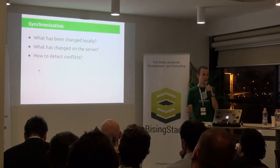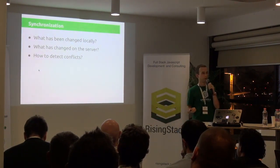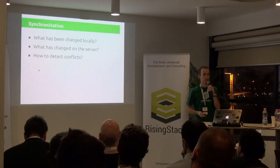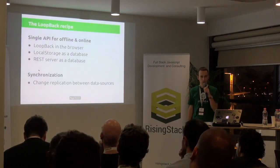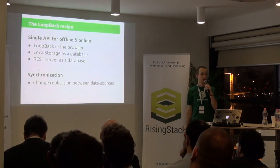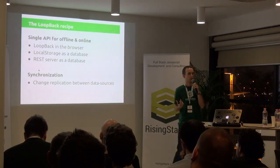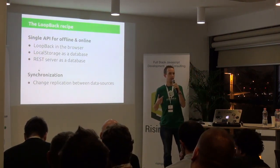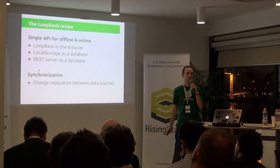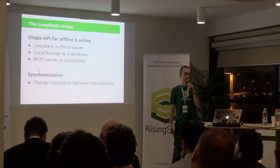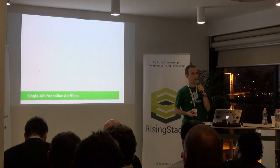How do you figure out what has been changed in the browser? What has been changed on the server in the meantime? And how to detect conflicts when both sides change the same record? So the Loopback recipe is to implement a single API for both offline and online mode. Actually we have the same API for server and offline and online clients. And then the second part is synchronization, which we implemented as change replication. Let's look at these two parts in more detail.